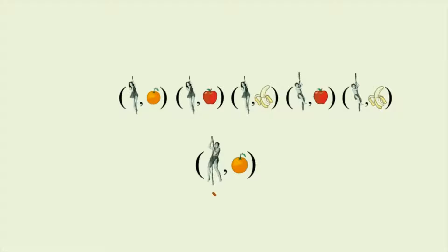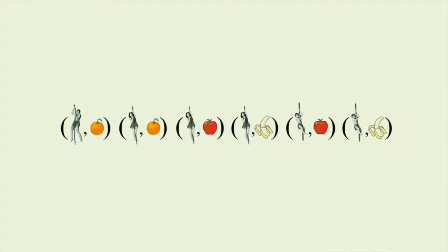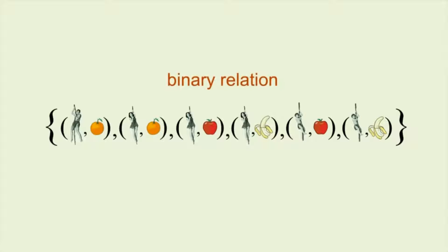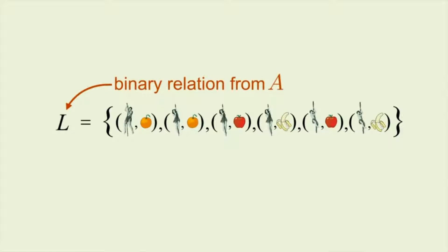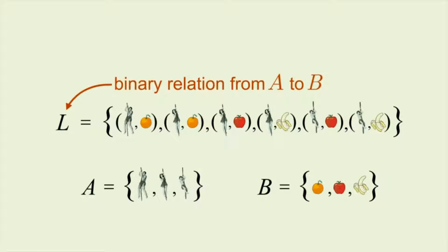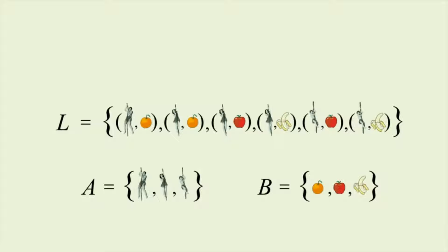For example, Tarzan likes oranges, but oranges don't necessarily like Tarzan. This collection of ordered pairs symbolizes associations from members of one set to members of another set. We call the set that contains these ordered pairs a binary relation. Let's name this set of ordered pairs L, so we say that L is a binary relation from set A to set B.